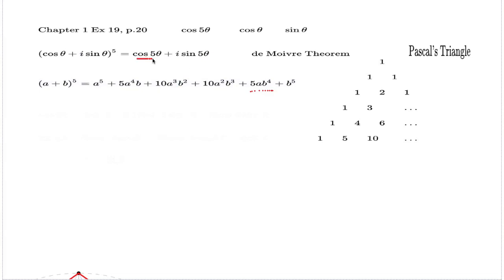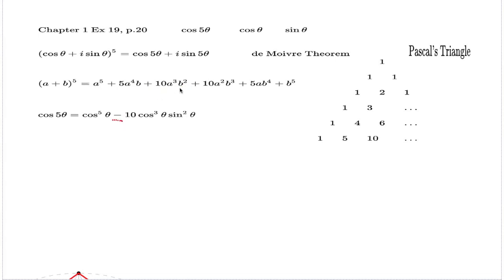So if I take the real part on the right-hand side — here it is, cos 5θ — I can equate it to the real part of the expansion. The real part will have the component cos⁵ θ, then negative 10 cos³ θ · sin² θ (negative because B² delivers i², which is negative), and finally 5 cos θ · sin⁴ θ. That finishes the job: we've expressed cos 5θ in terms of cos θ and sin θ.